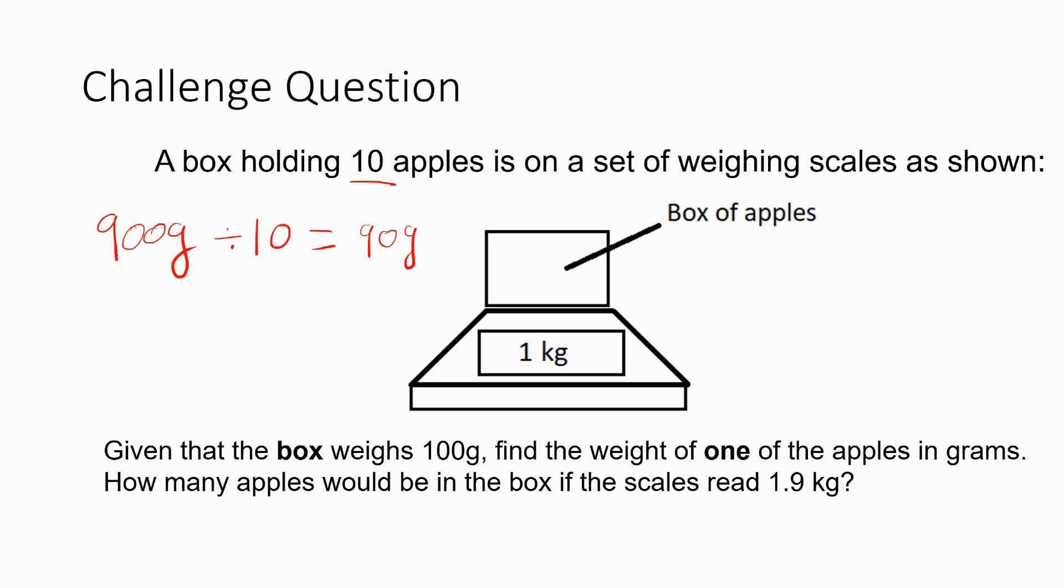Now, if the scales read 1.9 kilograms, you would say the total weight of the apples in the box would be 1,900 grams. So to work out just the mass of the apples, it would be 1,800 grams. Now, we now know that every apple weighs 90 grams. So to work out how many there would be, you would have to do 1,800 divided by 90, which is going to work out to be 20. So there would be 20 apples in the box if the scales read 1.9 kilograms.